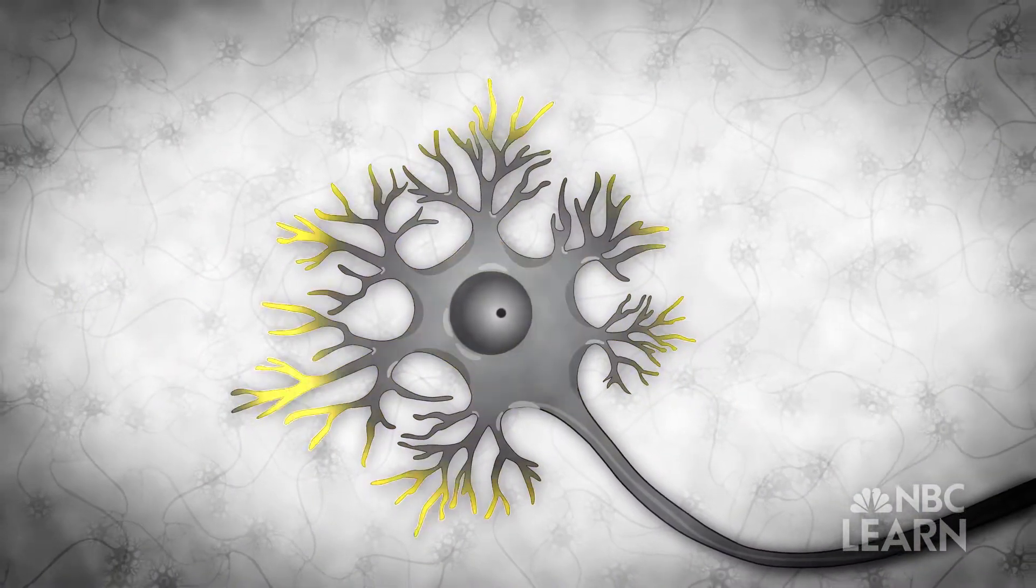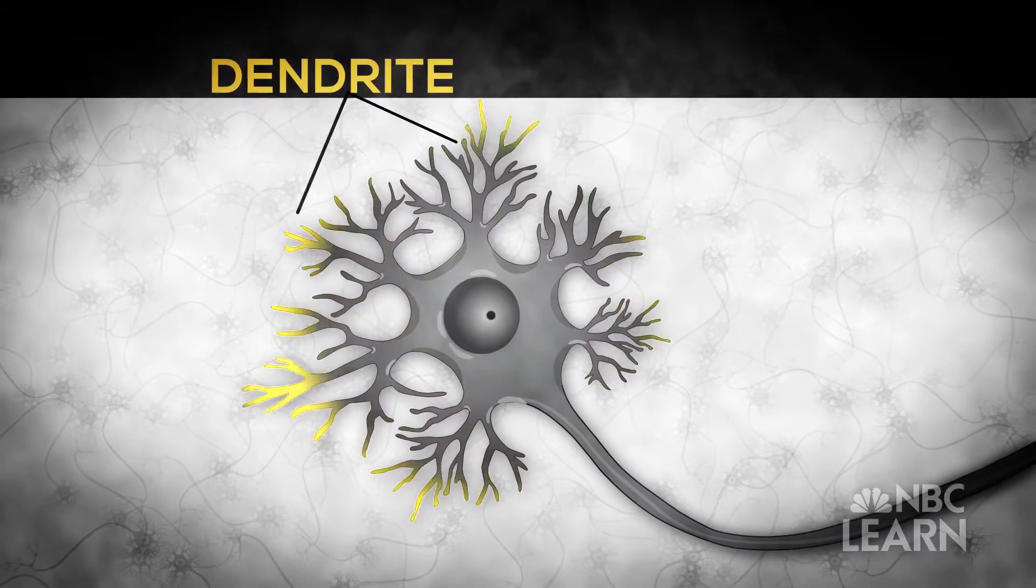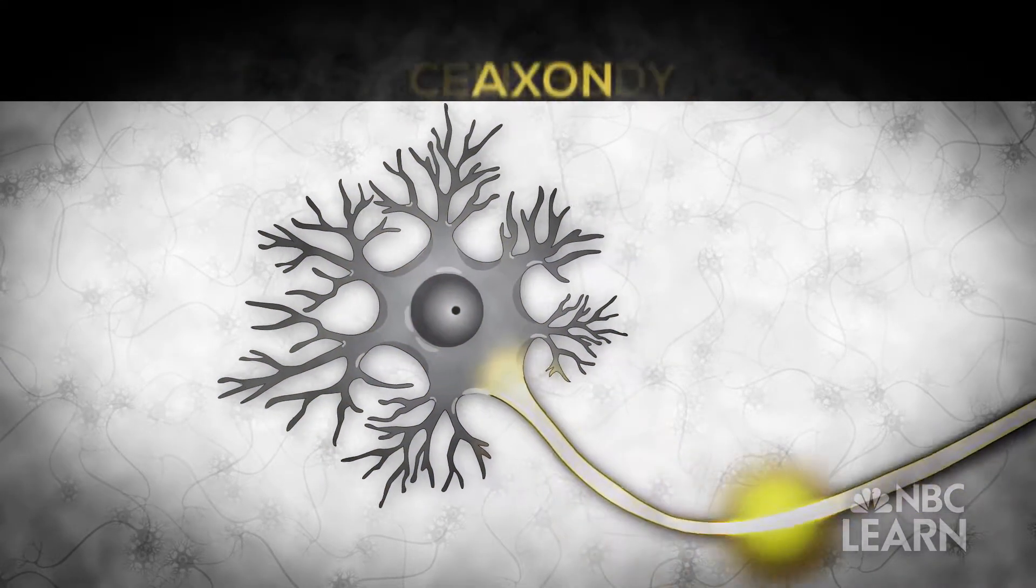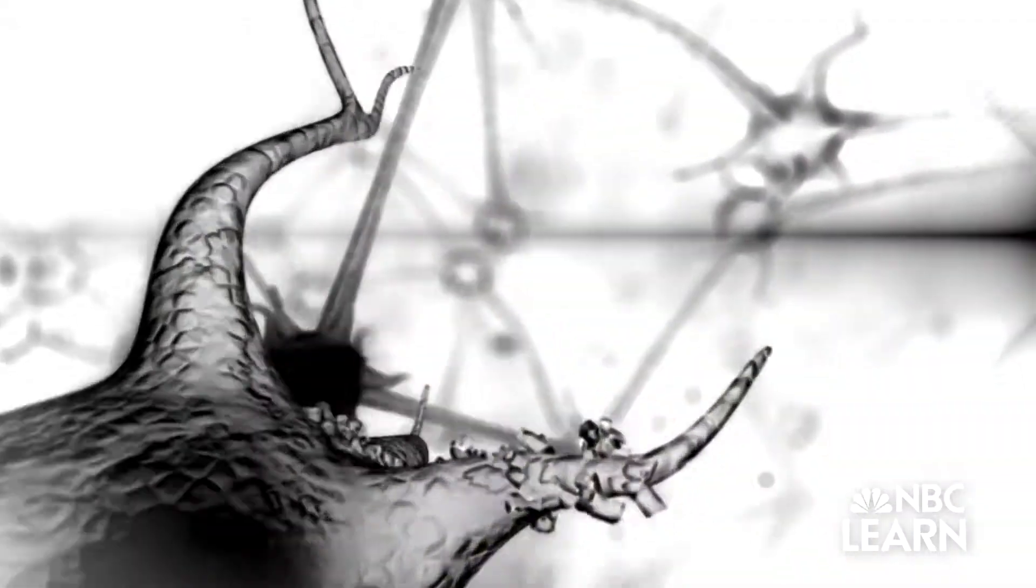in the form of electrochemical signals is received by the neuron's antenna-like dendrites, processed in the cell body, and then passed along through the axon to the next cell in just a fraction of a second. In a human brain,